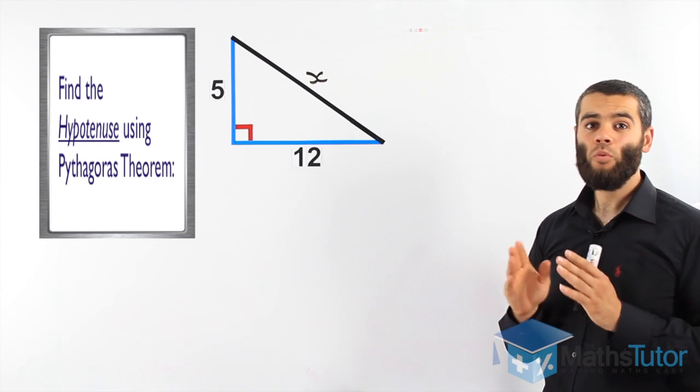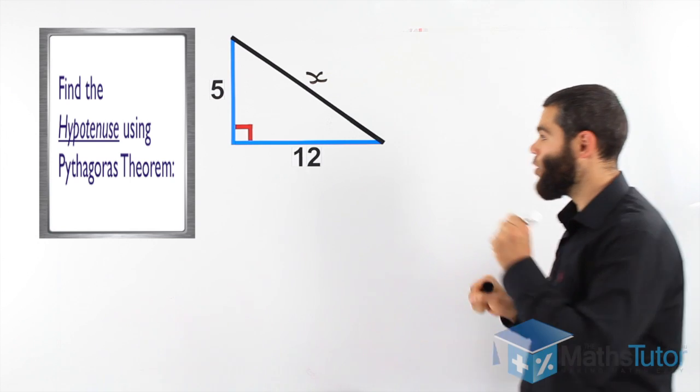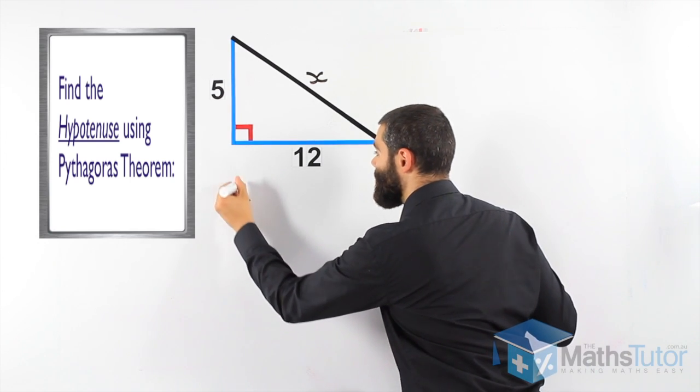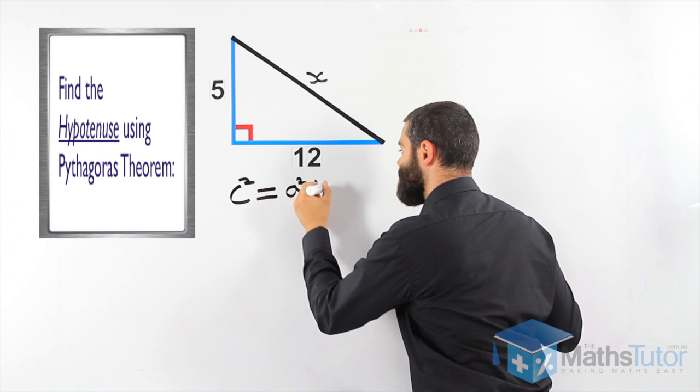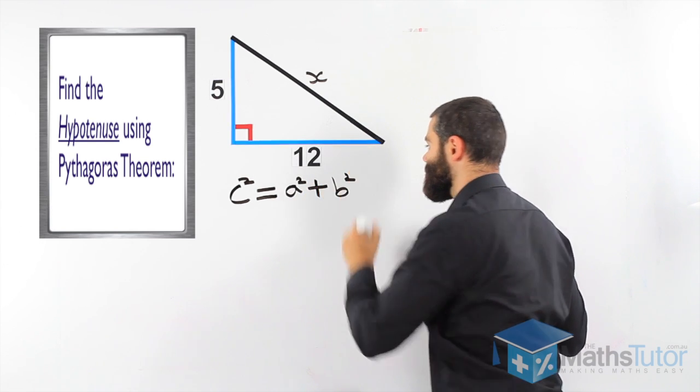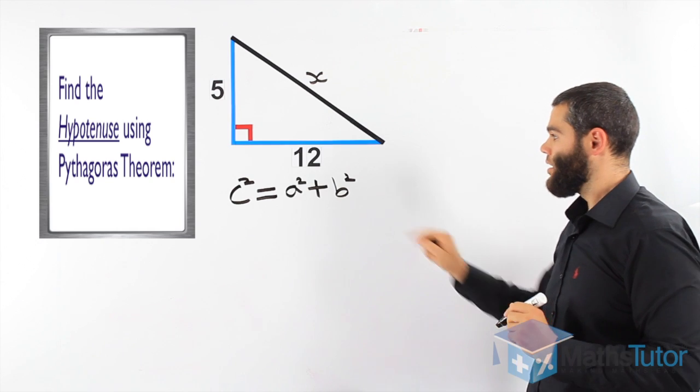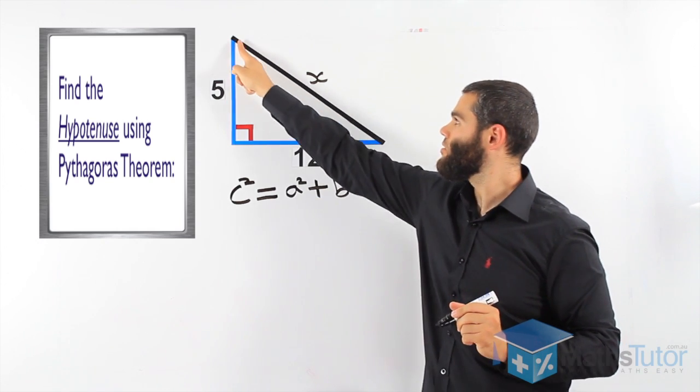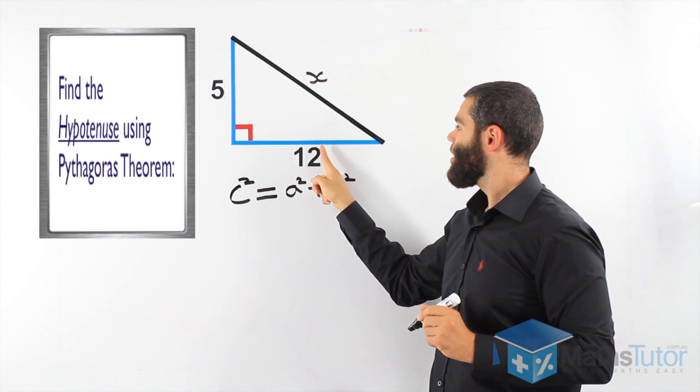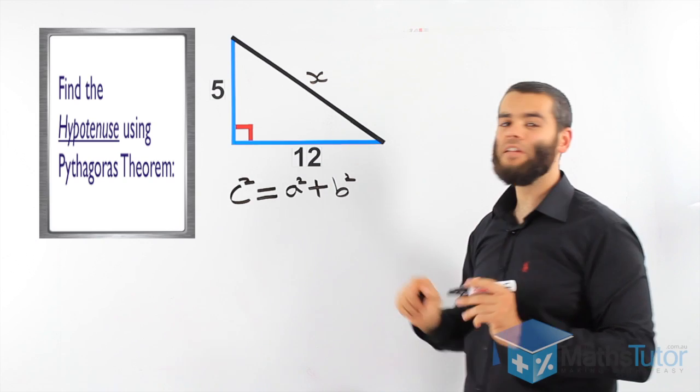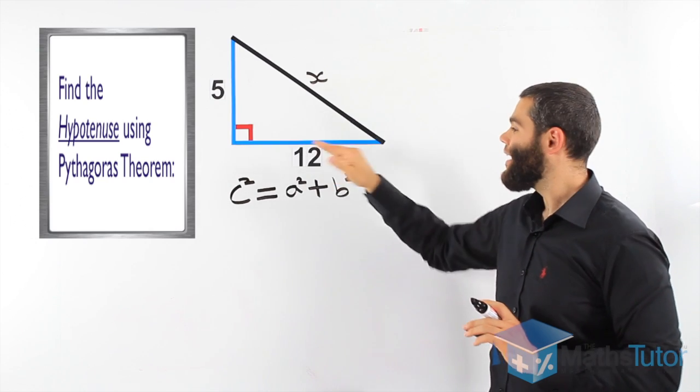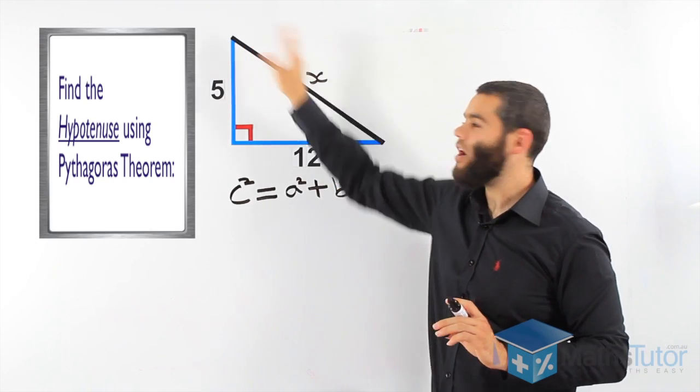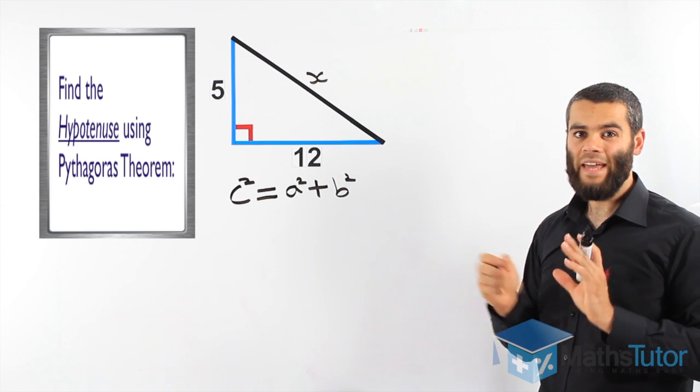Well first, we write the formula down. The formula states that C squared equals A squared plus B squared. Well, C is our hypotenuse and A and B can be A here, B here or A here, B here. It doesn't really matter as long as we know A and B are the two short sides and C is always the hypotenuse.